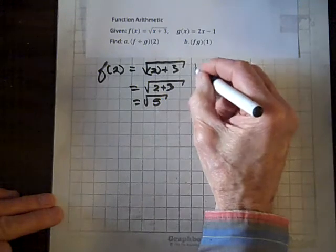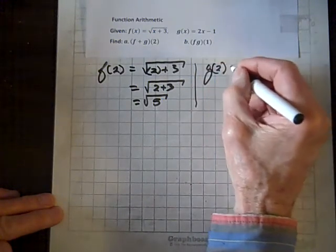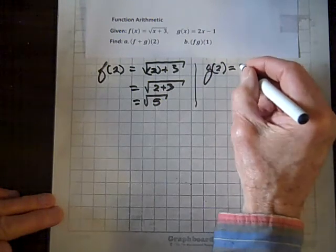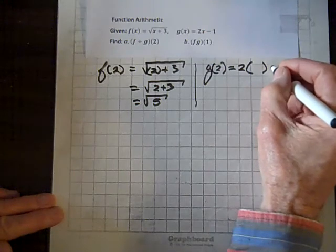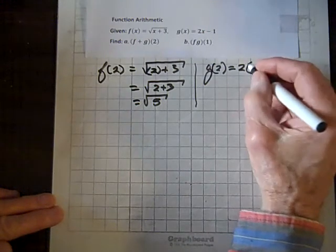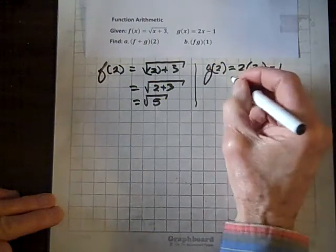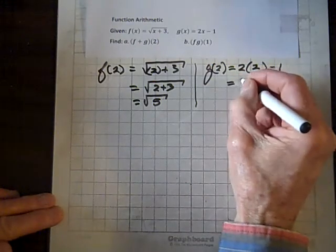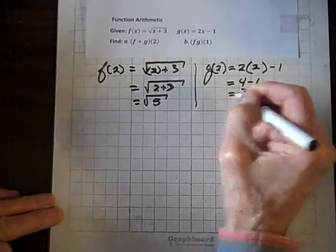Now let's do the same thing with g. We'll find g of 2. We've got 2 times - replacing x with parentheses - minus 1. Whatever we put in these parentheses, we have to put here. So that's going to be 2 times 2 is 4 minus 1 equals 3.